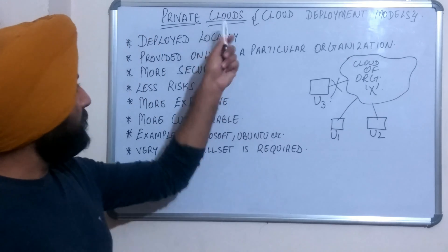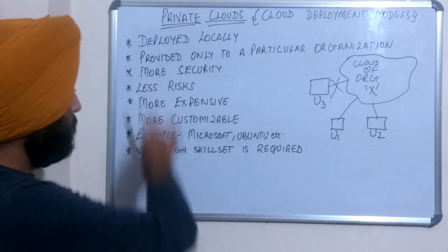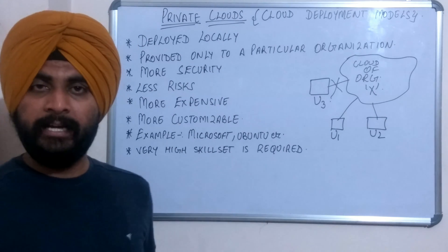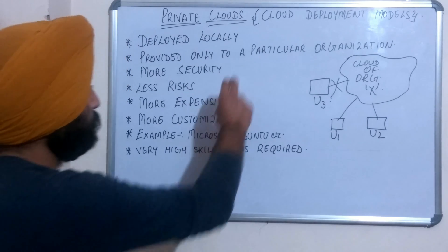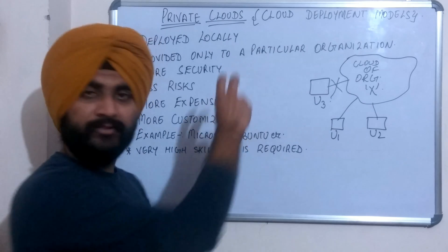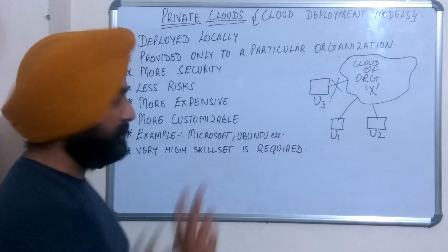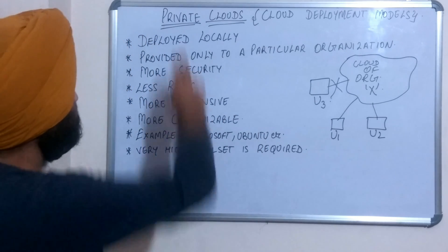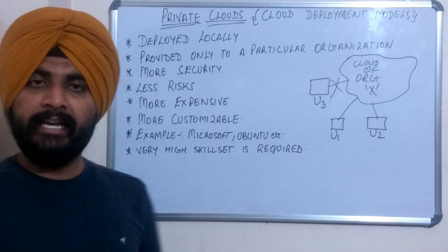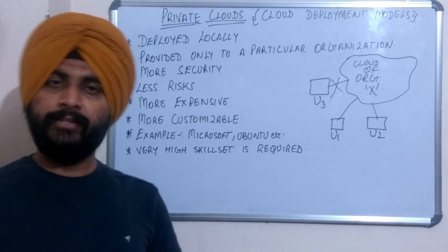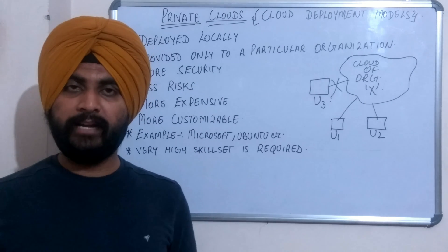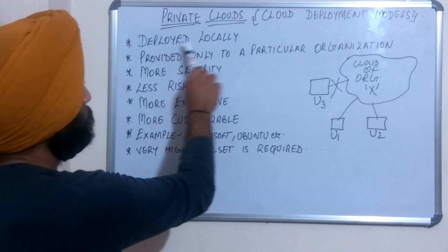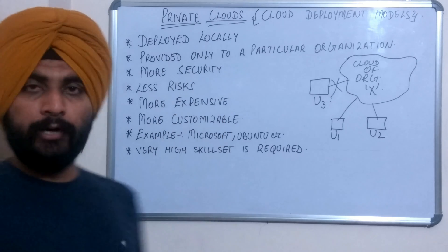In this video we will see private clouds. Here there are a total of 8 points and there is a diagram. Now we will focus on the first point. The first point is: deployed locally.